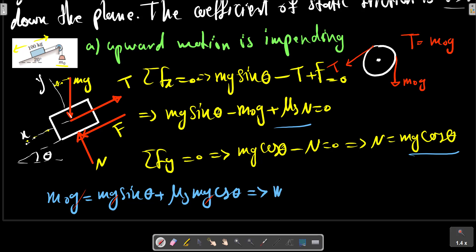m0 equals m times (sin theta plus mu_s cos theta). This is the maximum m0 that can be calculated for the motion in upward direction.